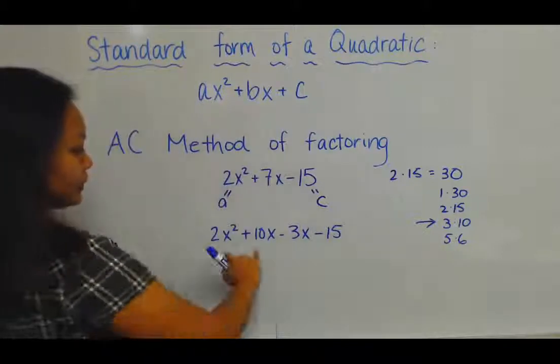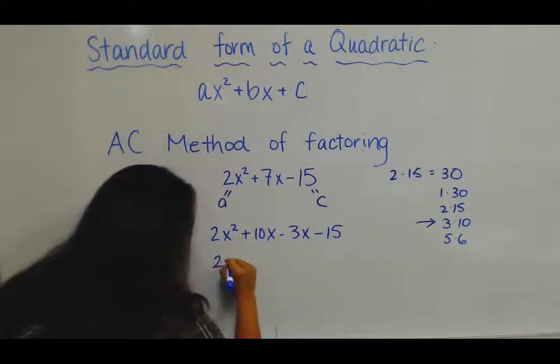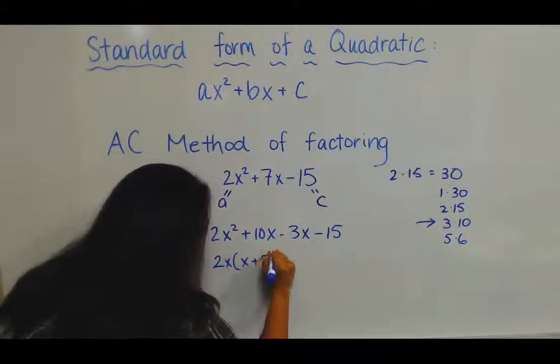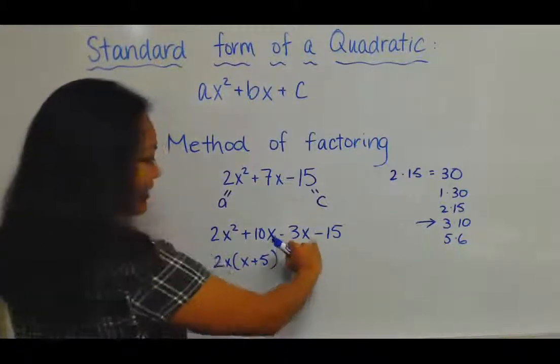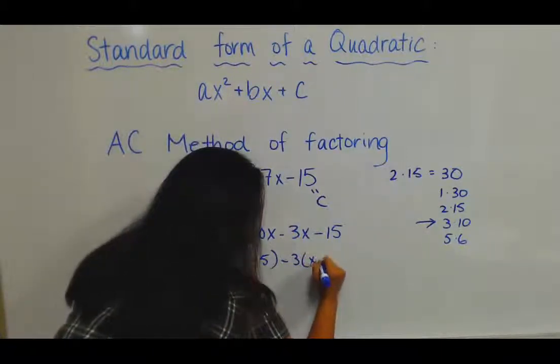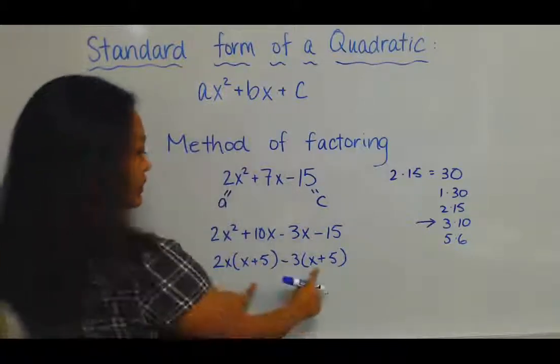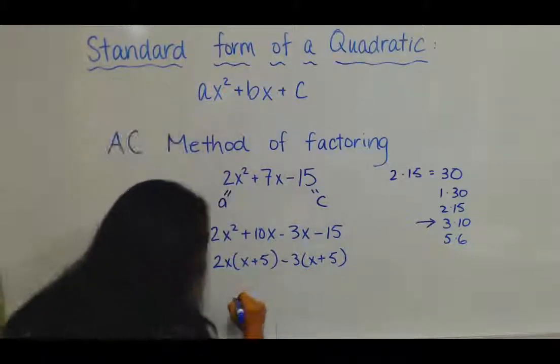From there, you want to factor out what is in common. So you have a 2 and an x here, so what's left over is x + 5. And over here, you have a negative 3 in common, so you want to pull that out. So what's left is x + 5 as well, which is the goal of factoring. You want these two to be the same so you can factor that out.